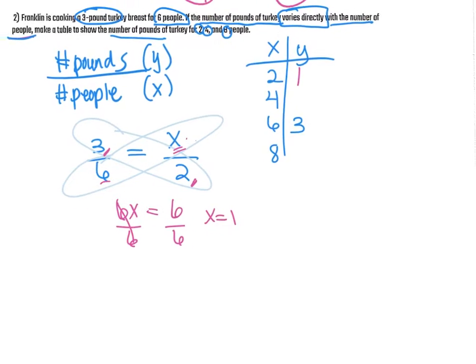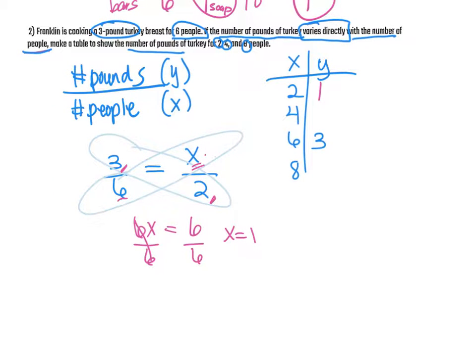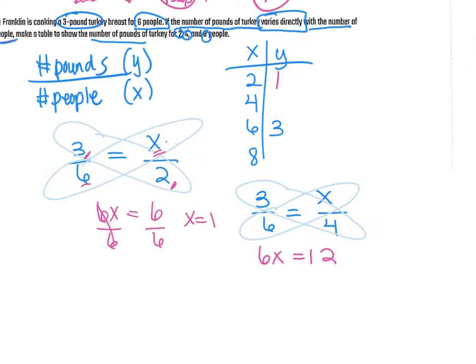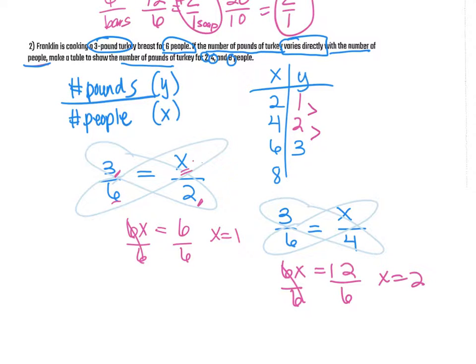And to fill in the rest of my table, I'm going to do the same thing. So I know that three pounds of turkey feeds six people. So how many pounds of turkey will feed four people? Two. Good. So I'm going to do the same thing. Cross-multiply. So six times x is six x. Three times four is twelve. So how many pounds of turkey will feed four people? Two. When we go and divide it. So now I've got enough here. I can see one pound for every two people. So one over two.